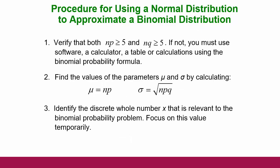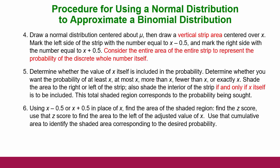If we want to do this procedure, the first thing we have to do is verify that both NP and NQ are 5 or bigger. Then we find the values for the mean and the standard deviation. We identify the discrete whole number X that is relevant to the binomial probability problem. Basically, how many things are we looking for? These discrete probability questions are always asking: what's the probability that if you have a sample of 10 voters, exactly three of them are Democrats? X is 3 — that's the discrete whole number.